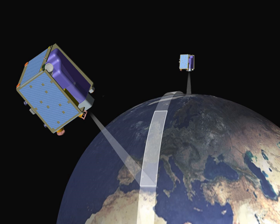Such information may be distributed to Earth stations within the system concerned. Platform interrogation may be included. This service may also include feeder links necessary for its operation. This radio communication service is classified in accordance with ITU Radio Regulations Article 1 as follows: Fixed Service Article 1.20, Fixed Satellite Service Article 1.21, Inter-Satellite Service Article 1.22, Earth Exploration Satellite Service, Meteorological Satellite Service Article 1.52.